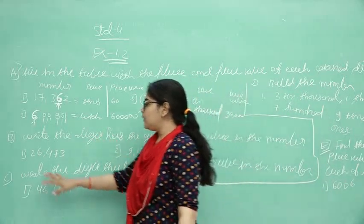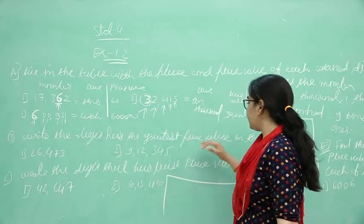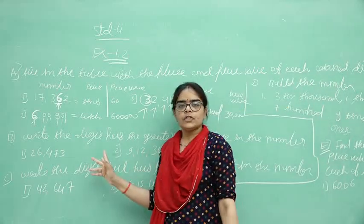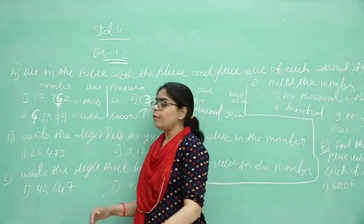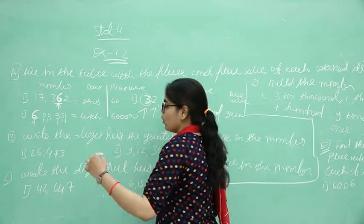Okay my students. Then after, in the question: write the digit that has the greatest place value in the number. Here, the question is given. You have to find out which one digit has the greatest place value.